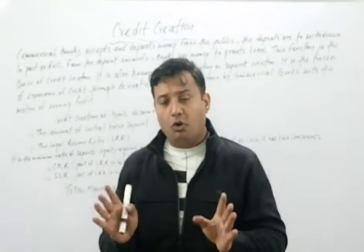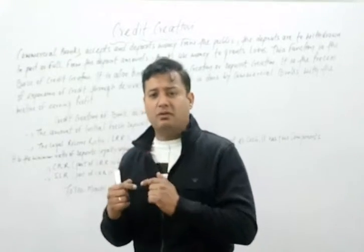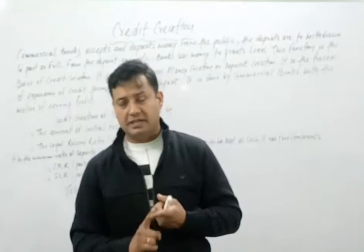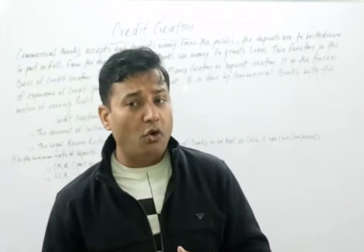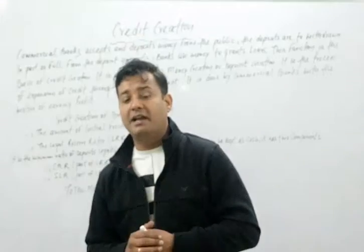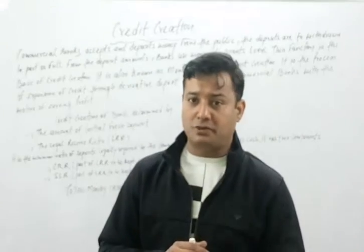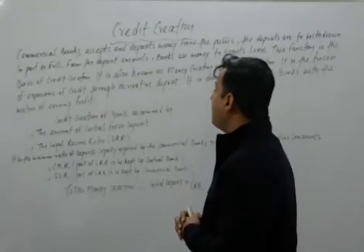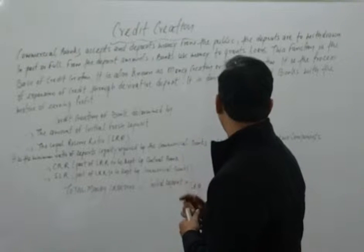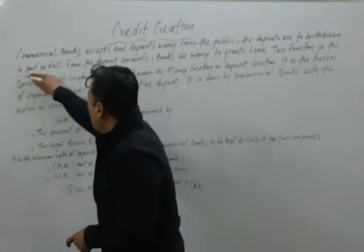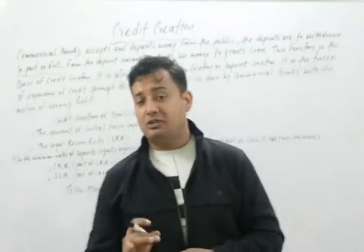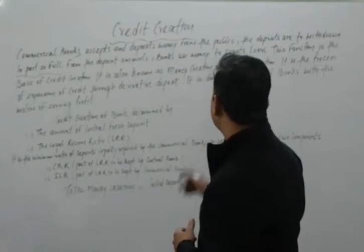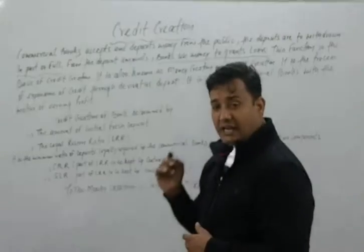Credit creation is just having the money and then granting it to others as a form of loan, and creating money from it. The public deposits money with the bank, and deposits are to be drawn in full or in part. Then from the deposit amount, the banks use that money to grant loans.